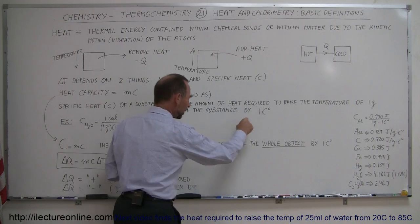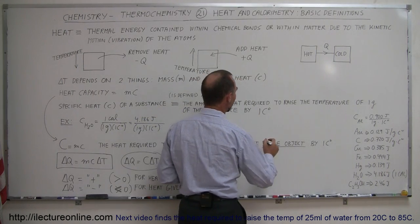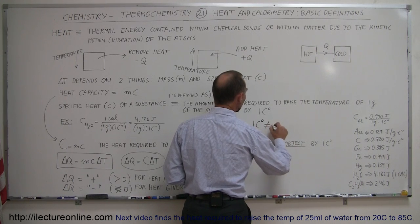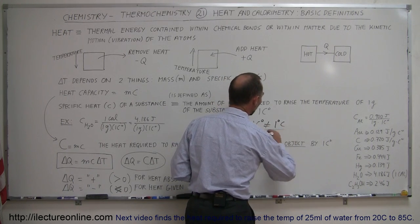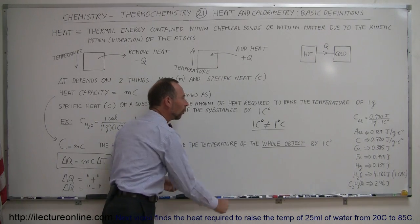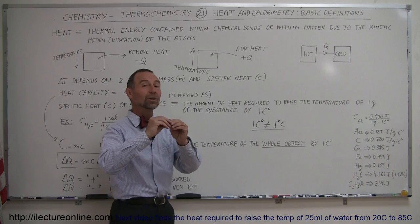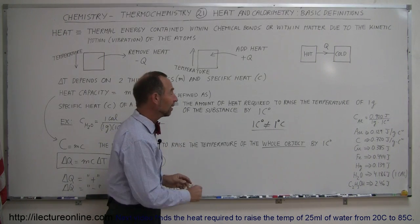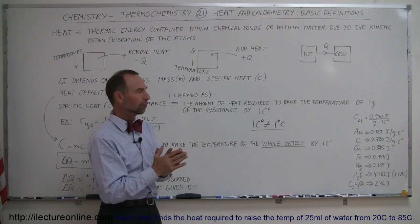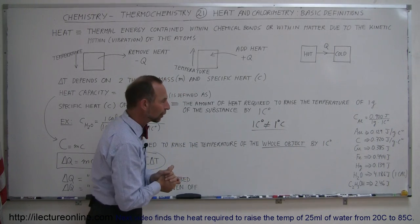One centigrade degree is not equal to one degree centigrade — it's a small but important formality. One degree centigrade means it's one degree above zero degrees centigrade. One centigrade degree is just the difference between one temperature and another, for example the difference between 20 and 21, or 35 and 36.